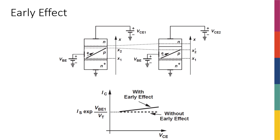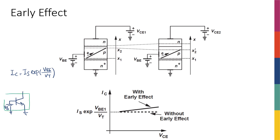Since we started talking about transistors, I've been advertising this device as a voltage-controlled current source — a perfect voltage-controlled current source. Because if this is my transistor, and the emitter is connected to ground and the base is connected to some battery and then to ground, if I draw a box around here, then I can actually say that this transistor looks like a voltage-controlled current source.